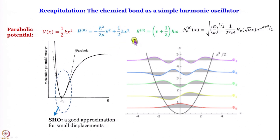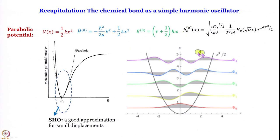This is your unperturbed Hamiltonian for the simple harmonic oscillator, whose energy we know is (v + ½)ℏω, which is the same as (v + ½)hν. The wave function is a constant multiplied by a Hermite polynomial multiplied by a Gaussian function. The wave functions can extend outside the potential energy surface — that is perfectly fine and that is how we get them.